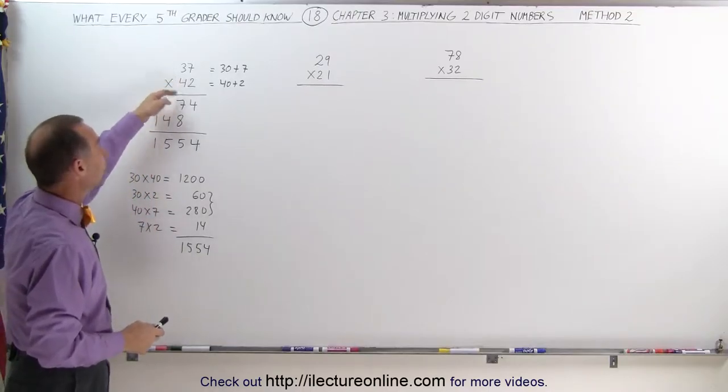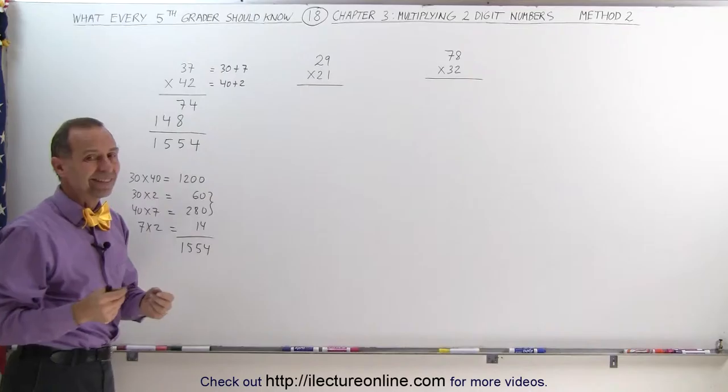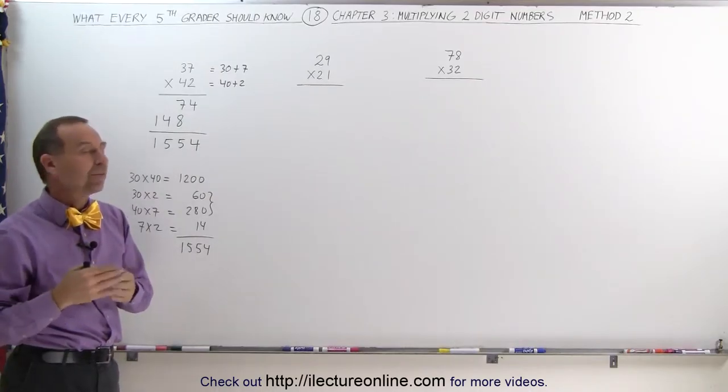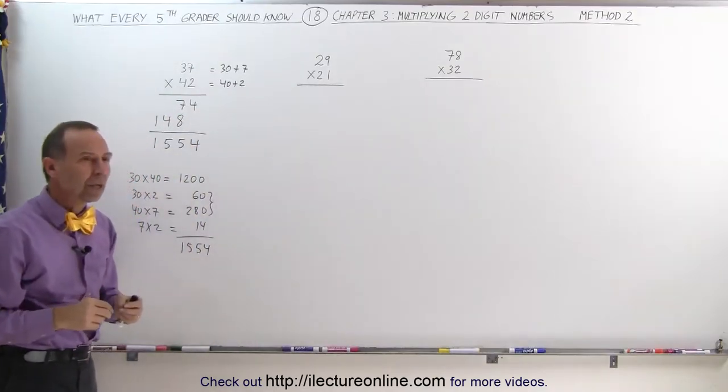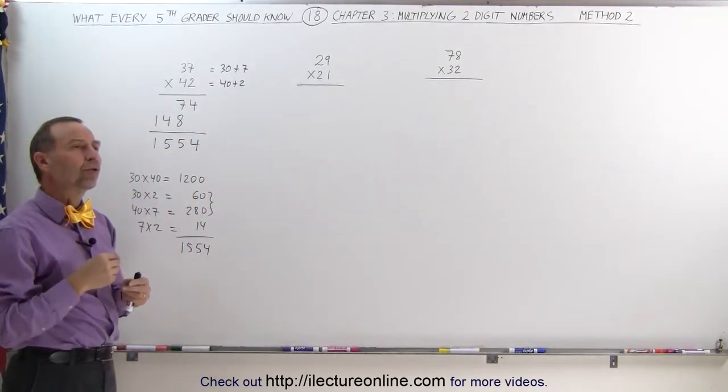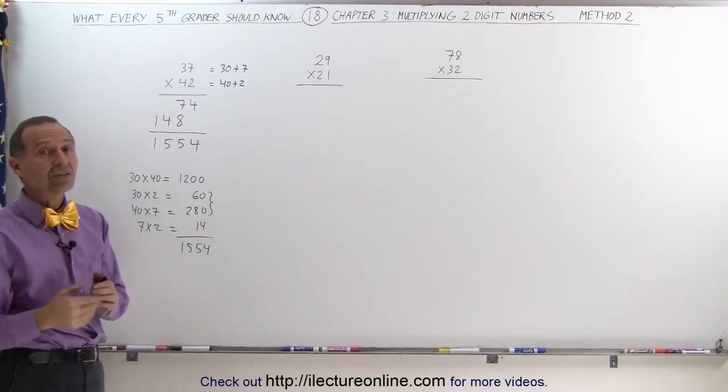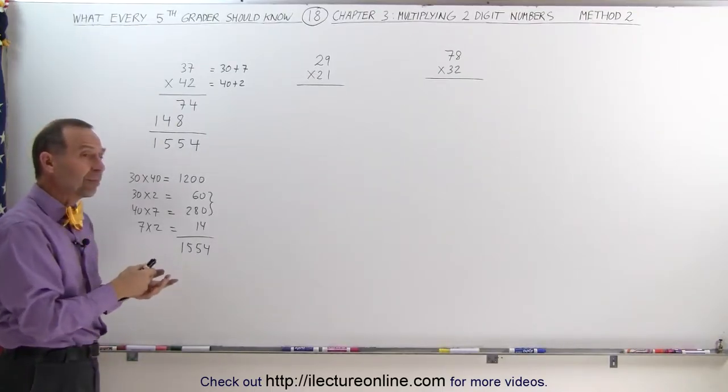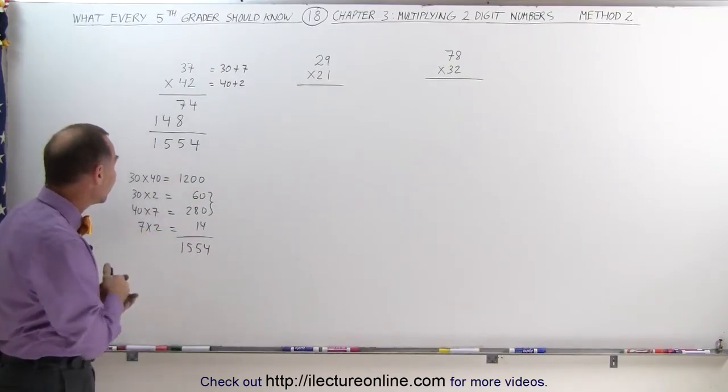You go 30 times 40, that's 1,200, remember 1,200. 30 times 2 is 60, 1,200 plus 60 is 1,260. Then 40 times 7 is 280. 1260 plus 280, now you say, well that could be pretty difficult to do in your head, and yes it takes a little practice, but 1260 plus 200 is 1460, plus 80 gives me 1,540.